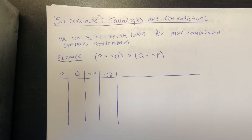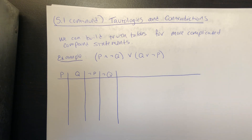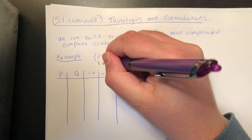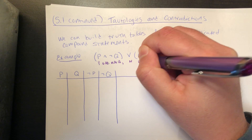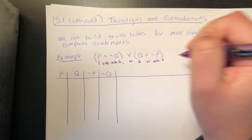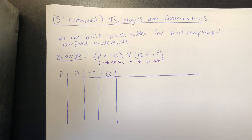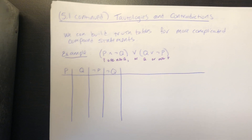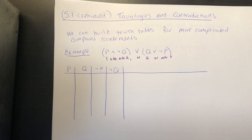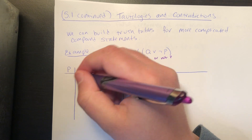Consider the statement for arbitrary statements p and q: (p and not q) or (q or not p). That's how we would read this statement symbolically. We can figure out the truth value of this entire statement based on the various truth values of the base statements p and q. Remember, p and q are each true or false, which means there are four different combinations of truth values for those basic statements.